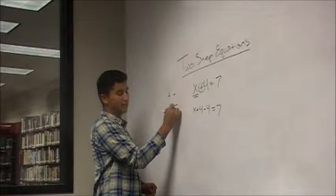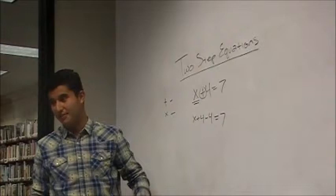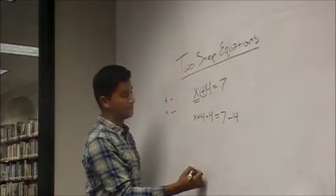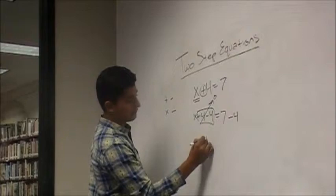And since we're subtracting on the left side, we also have to subtract on the right side by the same amount. So, since we're subtracting by 4 on this side, we also have to subtract by 4 on this side. So, we have 4 minus 4 and that goes off to 0. So, we have x equals 7 minus 4.